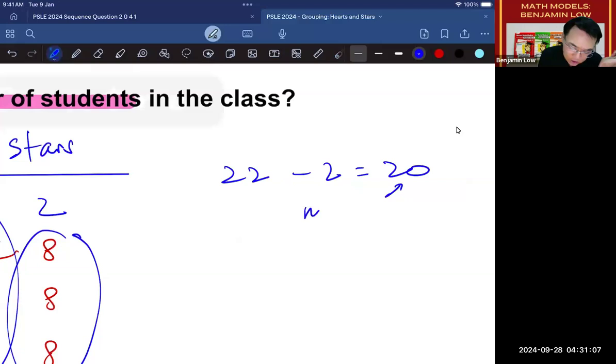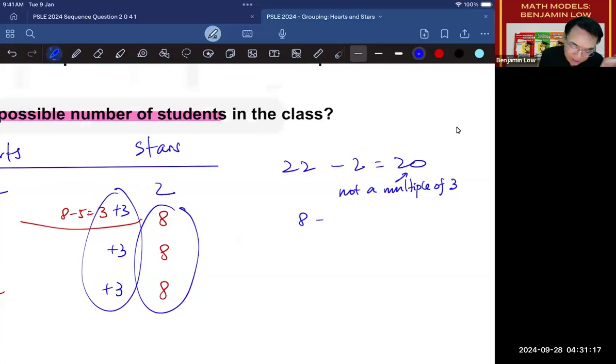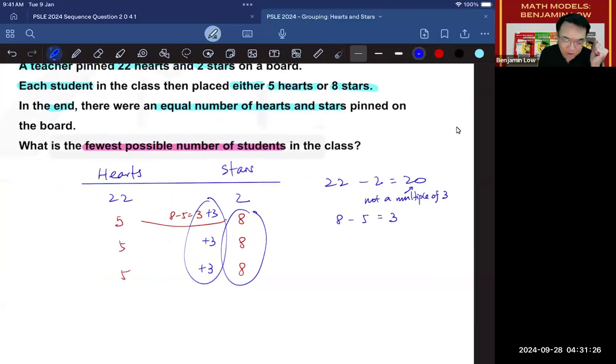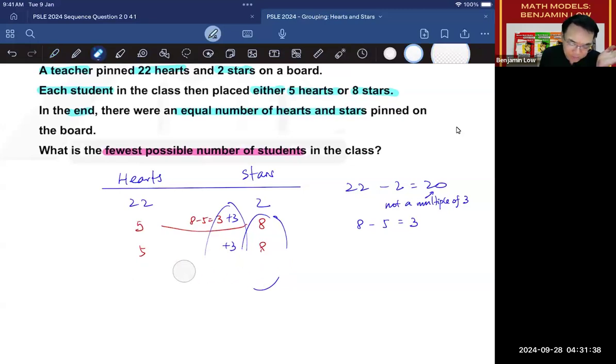That sounds reasonable, right? But the problem we are facing now is this. The person putting the stars will always be able to catch up based on the multiple of 3. But I know that the difference is 20, and 20 is not a multiple of 3.